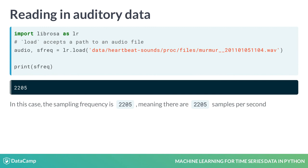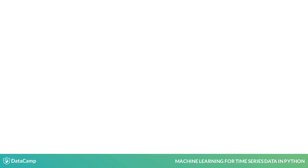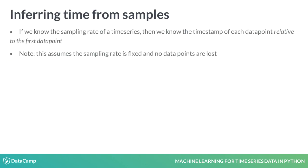Note that the sampling frequency here is 2205, which means there are 2205 samples recorded per second. Using only the sampling frequency, we can infer the time point of each data point in our audio file relative to the start of the file.